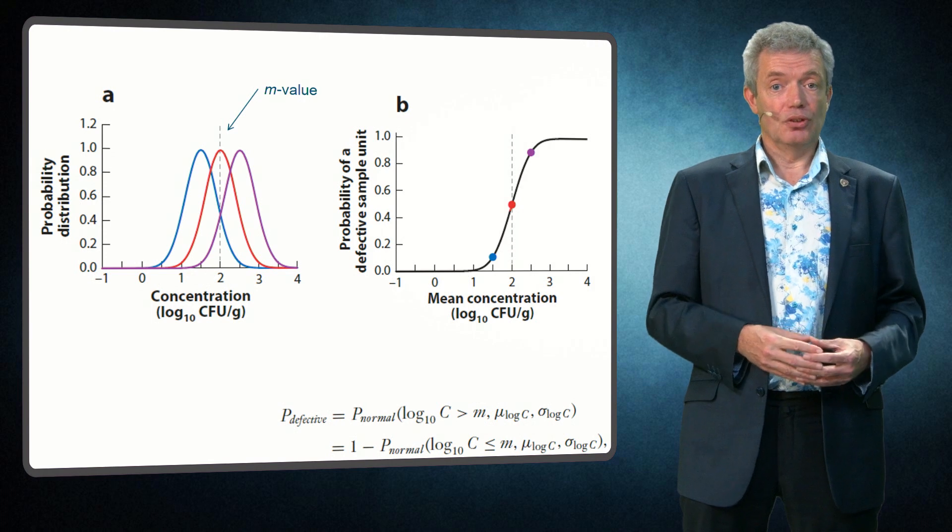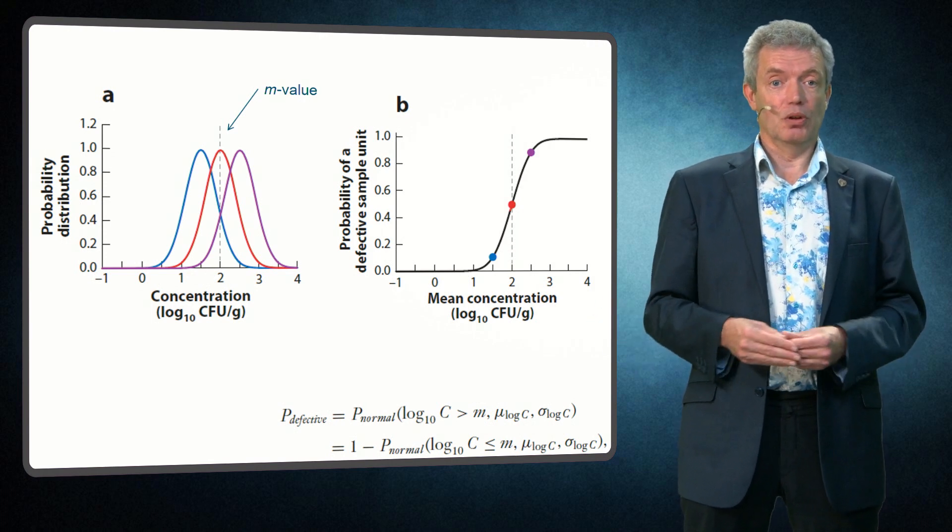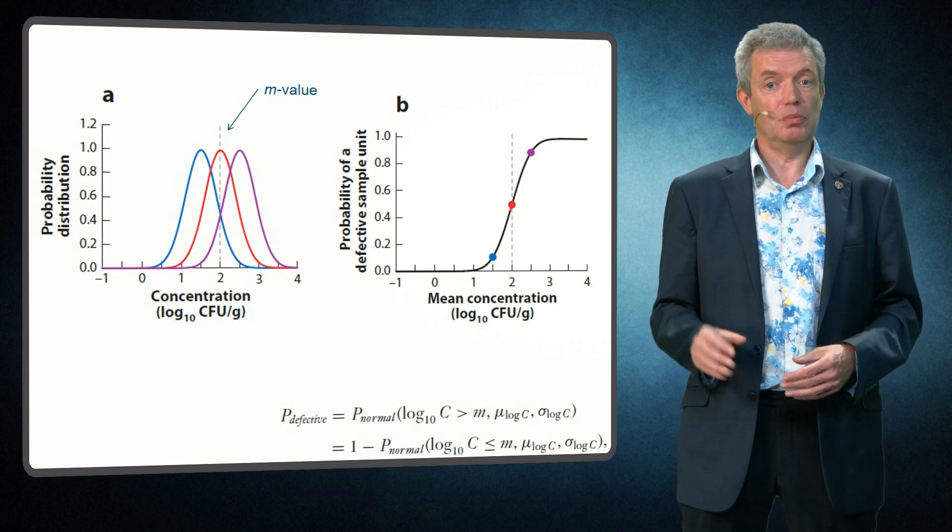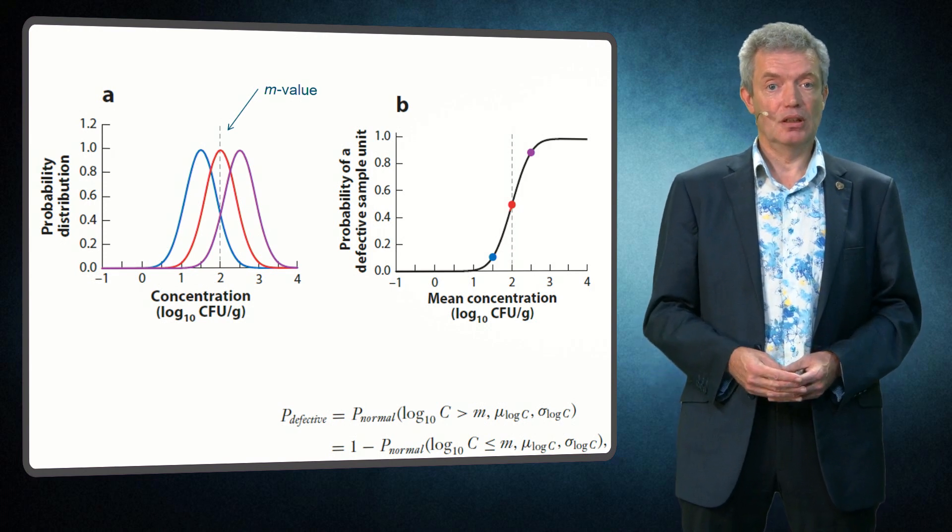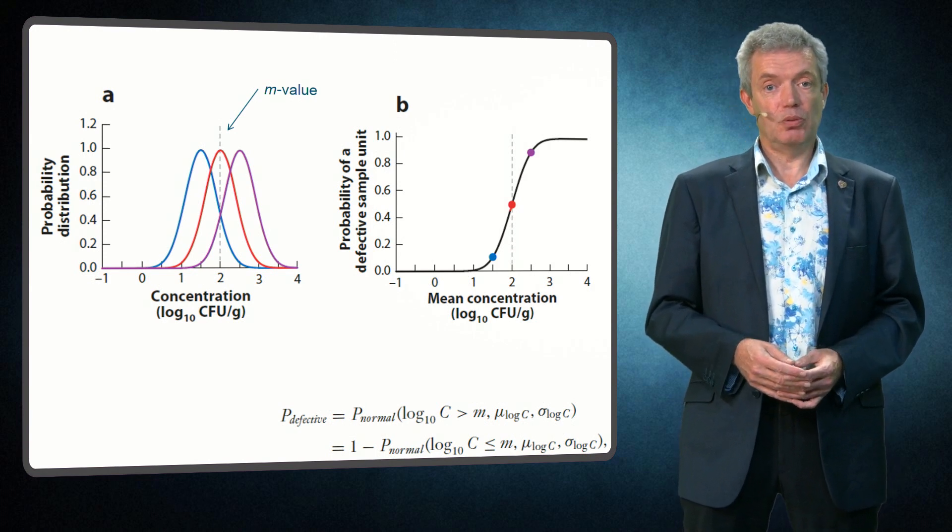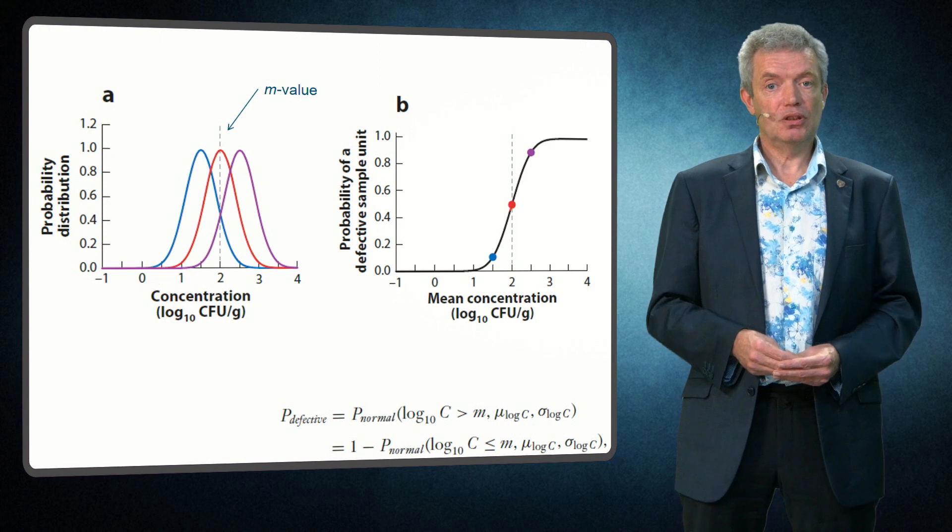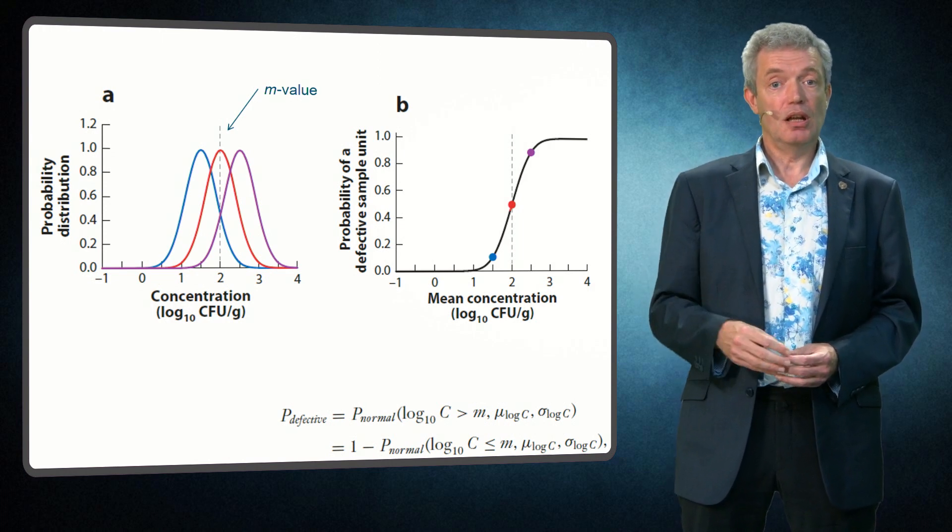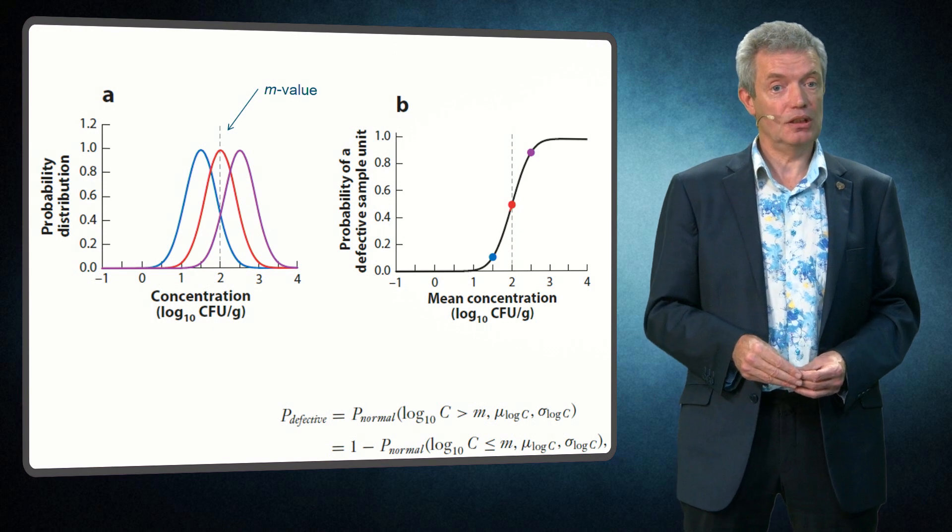If we have on the other end the blue distribution of the microorganisms at 1.5 as mean log, the probability that a sample will be above M will be lower, at about 10%, and for the pink curve it will be higher, at about 90%. These points we also place then in the right graph. This results then in the probability of one sample to be above the M value as function of the mean log concentration in the batch.